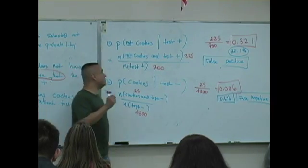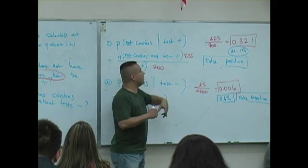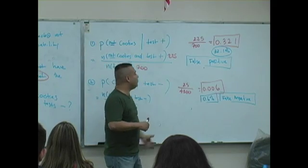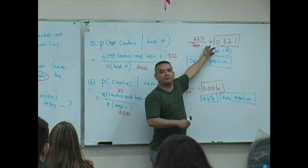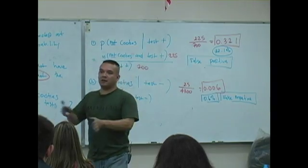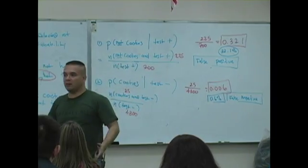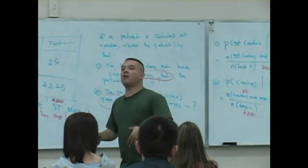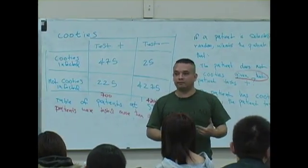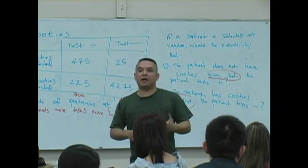Now what happens is, of those people that test positive, that's the first thing you go, oh my God. What's the likelihood I do not have cooties, but I tested positive? Well, this is a much higher value. And so what happens is, of people who test positive for anything, pregnancy, tuberculosis, cooties, whatever, there's a follow-up test. Is that true? To verify that result. So there's a follow-up test.